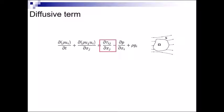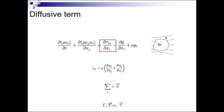Tau is in fact the shear stress tensor, which for a Newtonian incompressible flow is written as follows, where the terms inside the parentheses are in fact the gradients of the velocity components. The diffusive term for the control volume omega, shown on the right-hand side of the picture, can be written as follows. Additionally, for a general scalar quantity phi, the diffusion term is written as shown on the last line. Here gamma indicates the diffusivity.